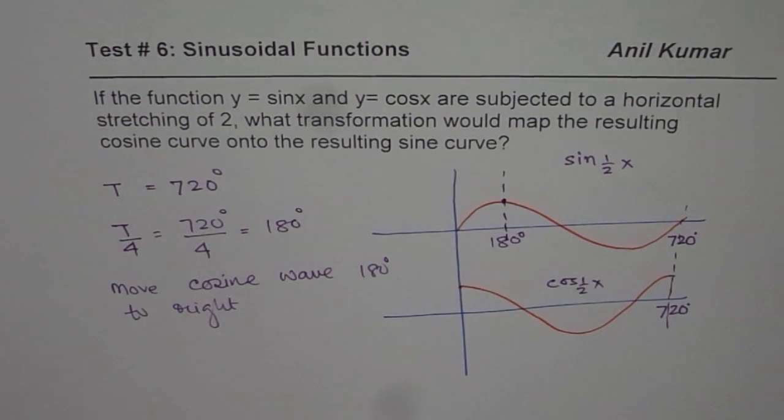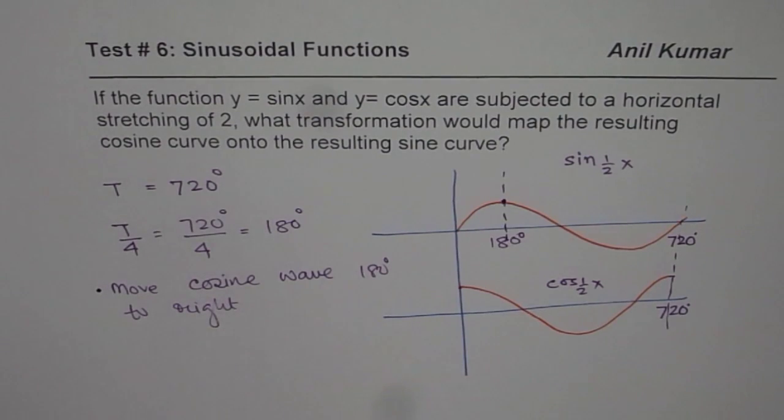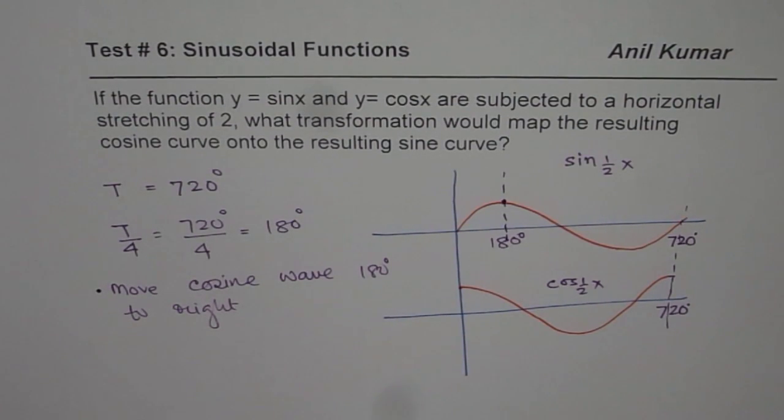we can say you have to move cosine wave 180 degrees to right. So that it can map to the sine wave. So that is how you are going to answer this question. I hope that helps. Thank you and all the best.